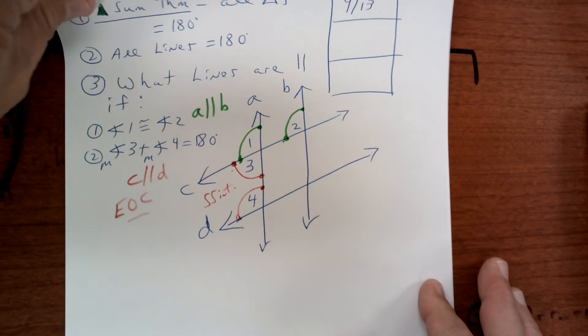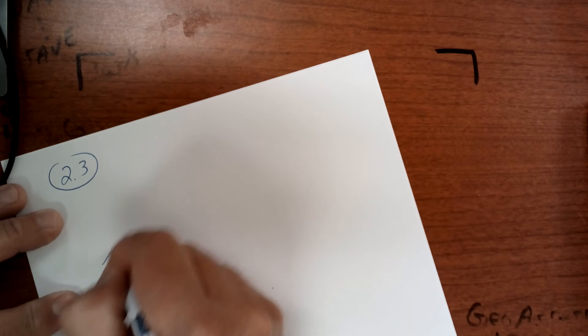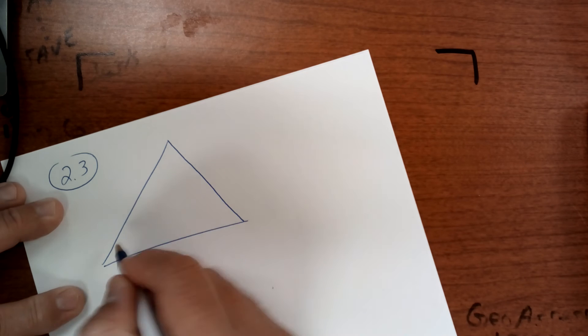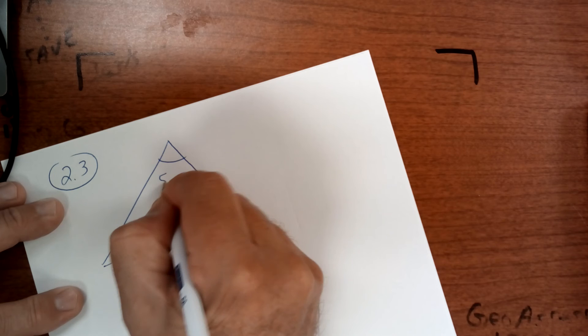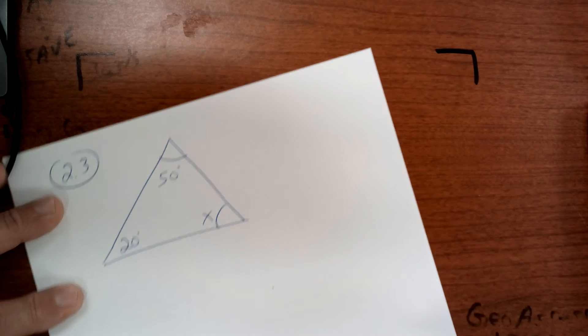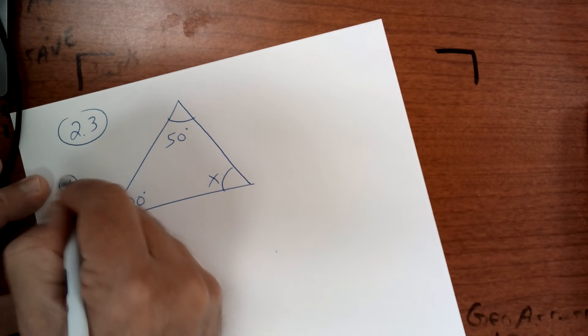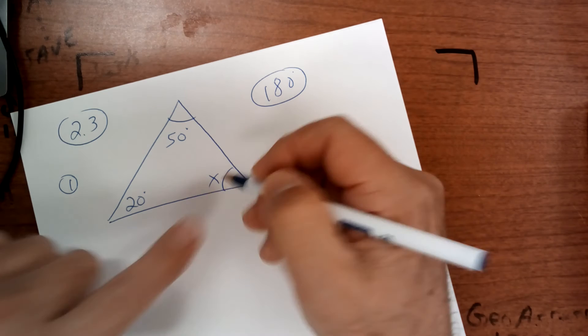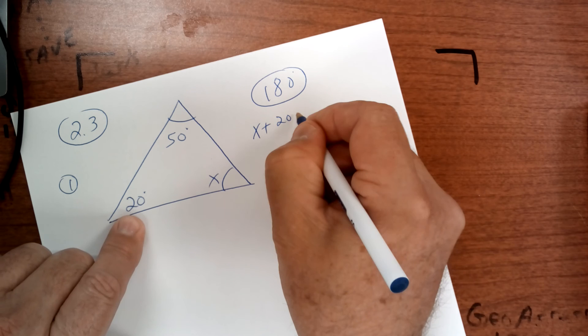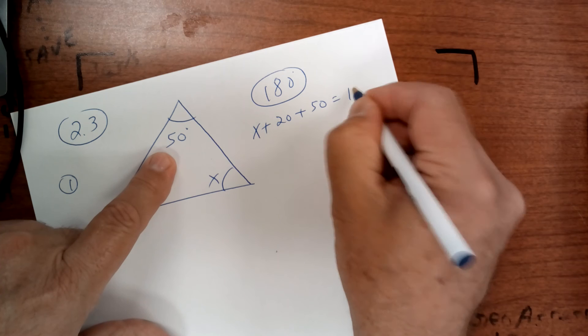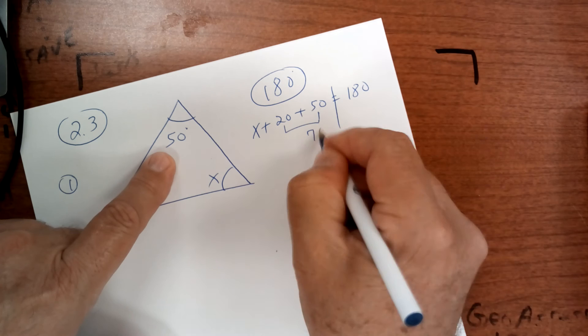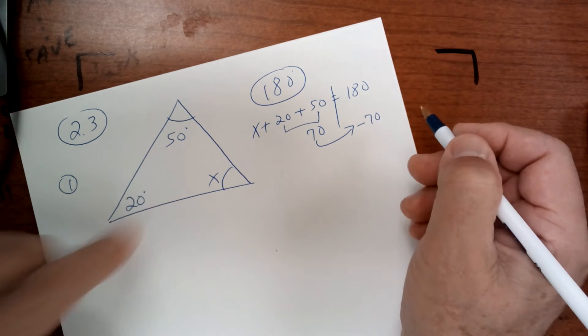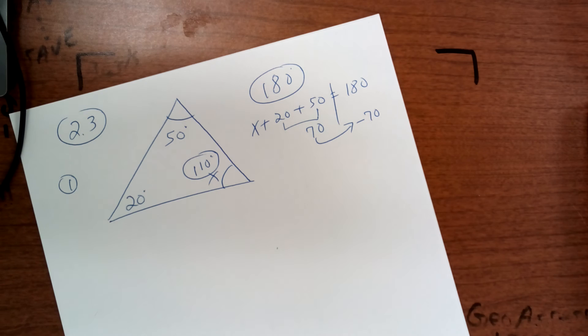Let's talk about today's work. I want you to draw this triangle here on a new sheet of paper, so put 2.3 and draw this triangle. Make this 20 degrees, 50 degrees, and make this one X. Every triangle adds up to 180 degrees by the triangle sum theorem, so you're going to take X plus 20 plus 50 and set it equal to 180 degrees. This is 70 degrees, so you're going to subtract 70 from this side and get 110, and you're done.